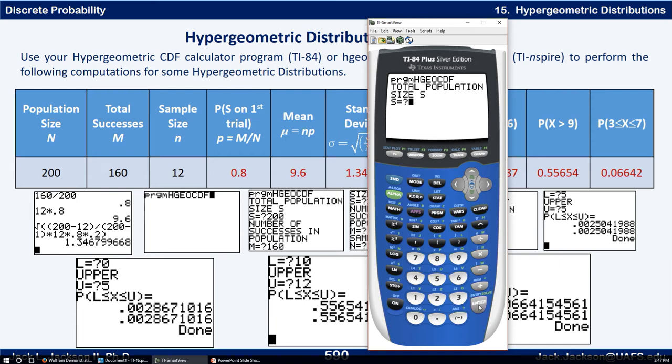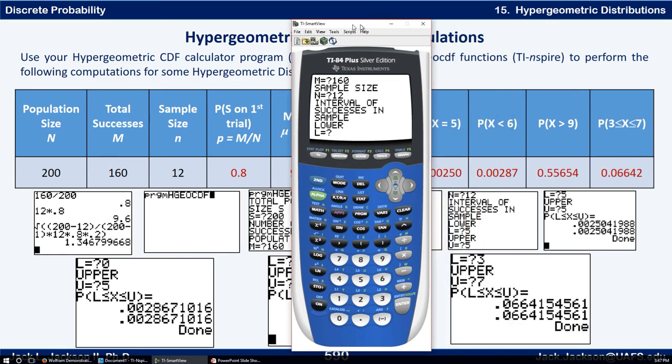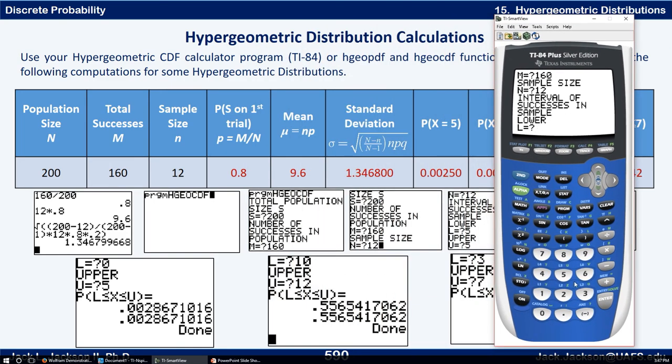So you run the program hgocdf. Even though it's a pdf this works too. Let me show you how this works. We want population size of 200, 160 successes in the population, sample size of 12. The lower limit, well we're finding the probability that x equals five. So lower limit is five. Upper limit is five. And that gives us this number right here.